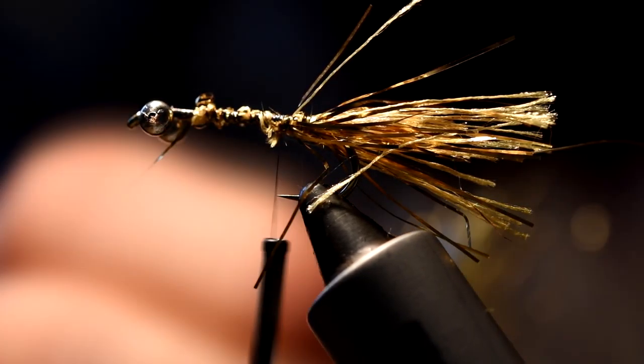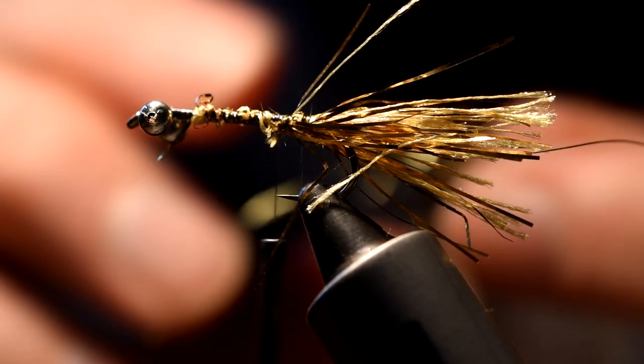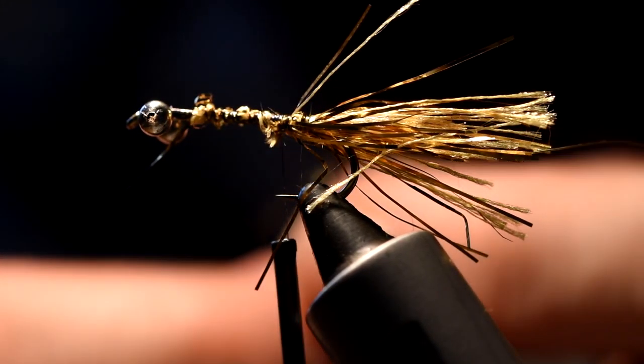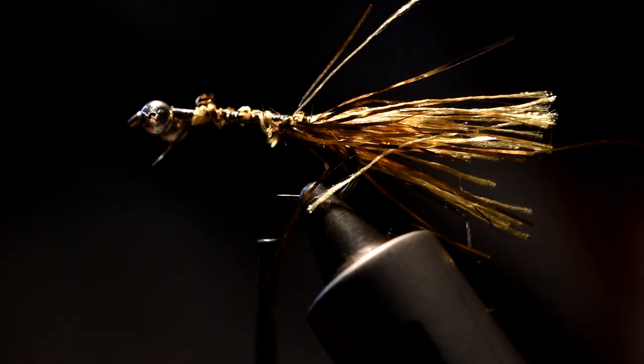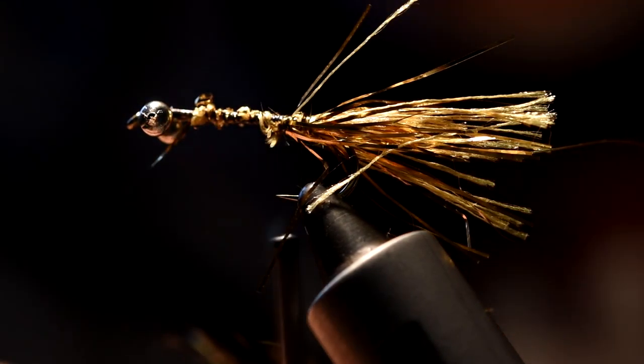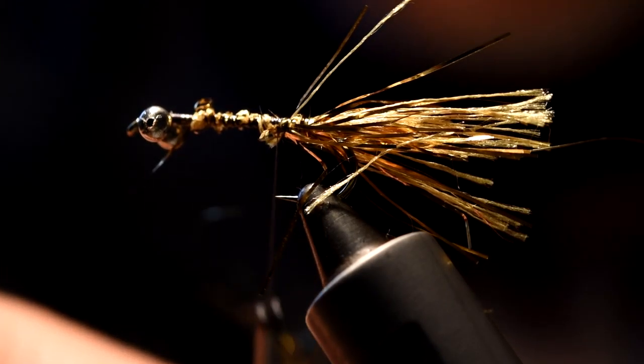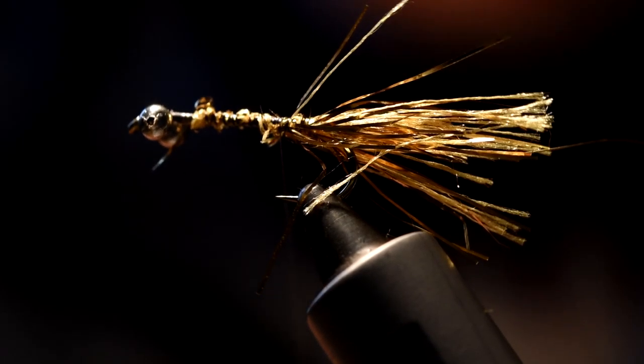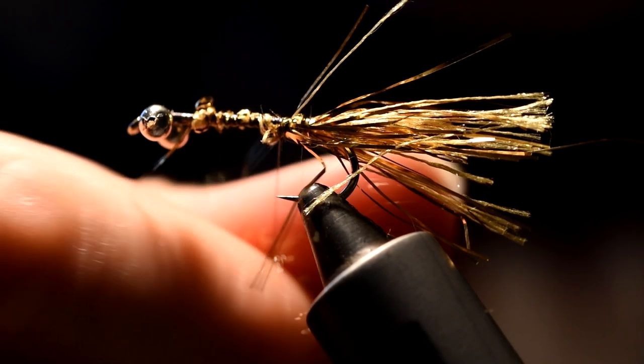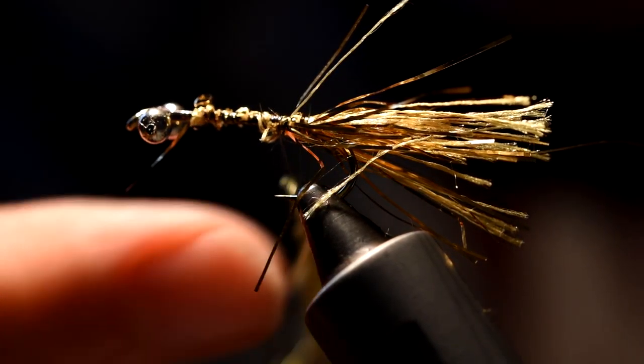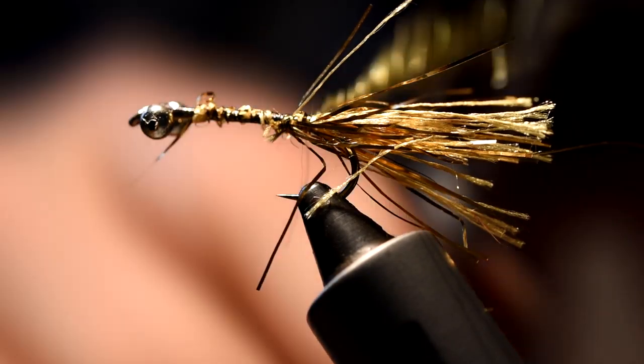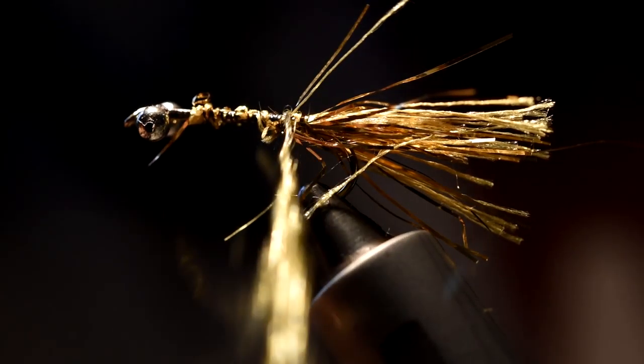So now you want your dubbing. Now this stuff, although it's quite long, straggly, and looks quite coarse, actually dubs on really easy. So I don't even bother with wax for it, you just don't need it. And get yourself a bit of thread and it sort of almost twists on like these thumb strands of wire. Get a nice thin rope at the back of your fly.